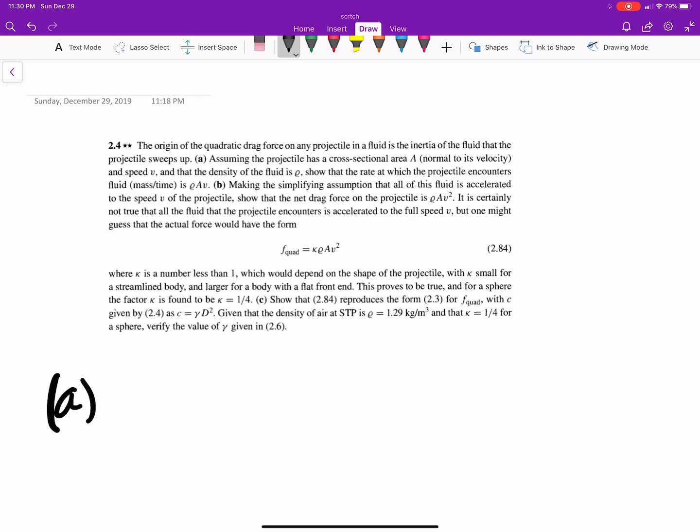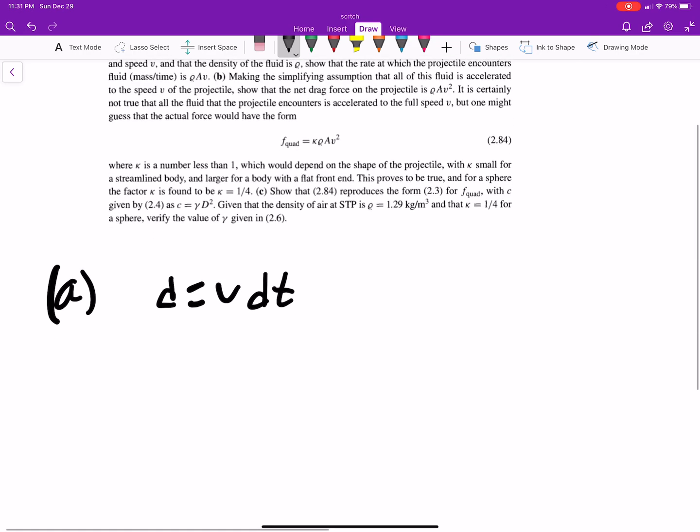Assume the projectile has a cross-sectional area A, normal to the velocity, and speed V, and the density of the fluid show that the rate which the projectile encounters the fluid is ρAV. Well, let's start with this. The distance traveled is the speed per this section of time.